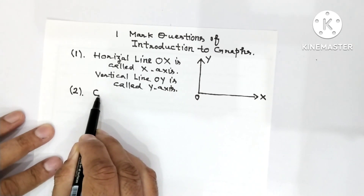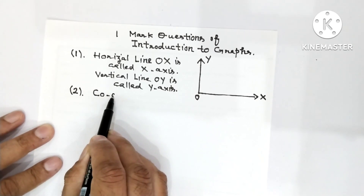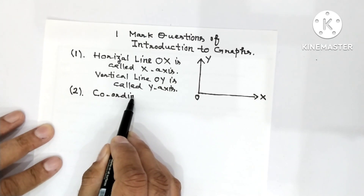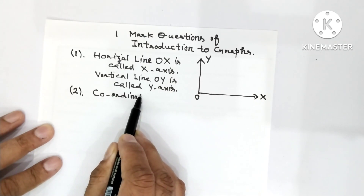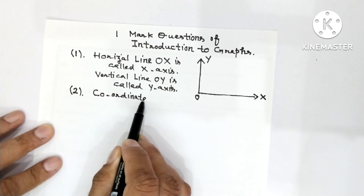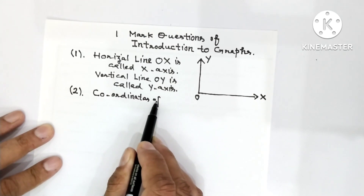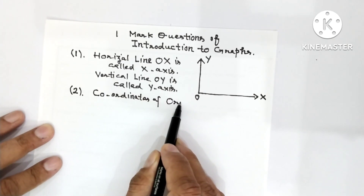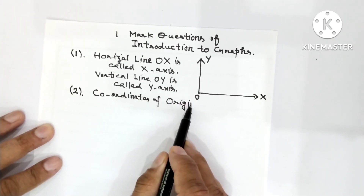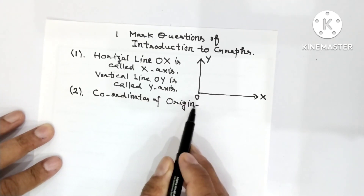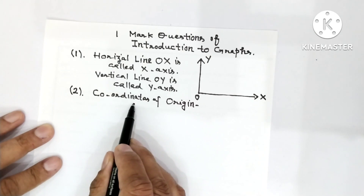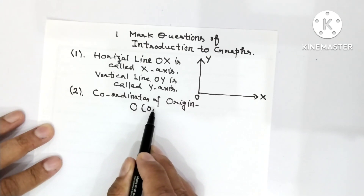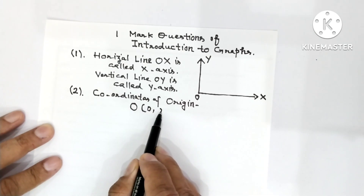Now we have to write the coordinates of origin. Coordinates of origin — so coordinates of origin, how will we write? O has coordinates (0, 0).